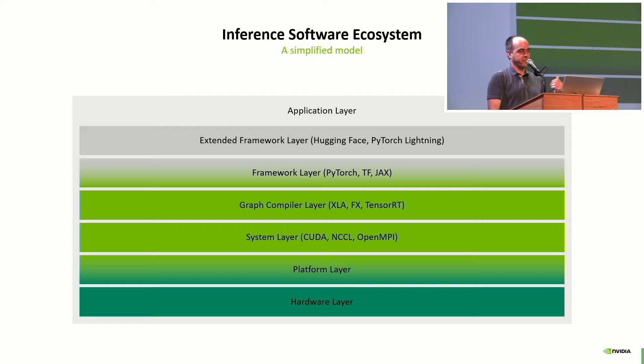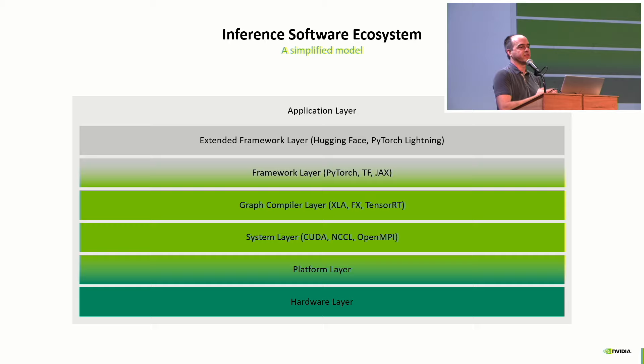On top of the graph compiler, you build the framework layer: PyTorch, TensorFlow, JAX — there are dozens of frameworks. Then the extended framework layer, where you have Hugging Face, a popular place to go get a neural network and download it. All of this together forms a software stack that goes to the application layer — how you build software for your users or other developers.